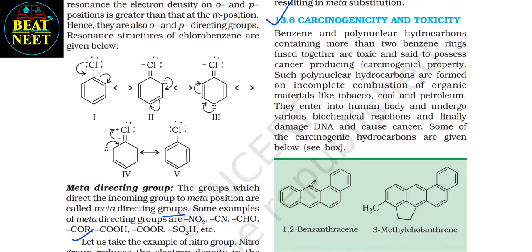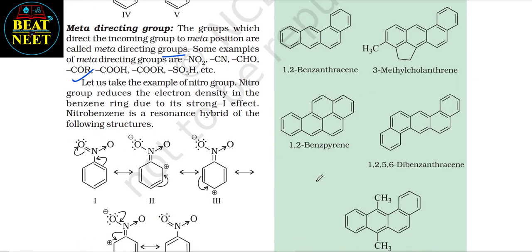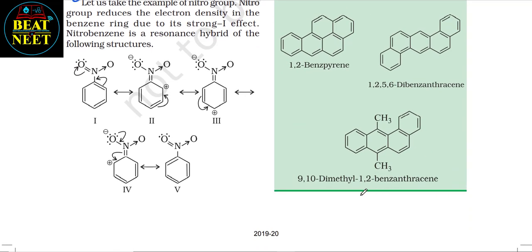13.6 Carcinogenicity and toxicity: benzene and polynuclear hydrocarbons containing more than two fused benzene rings are toxic and possess carcinogenic (cancer-producing) properties. Such polynuclear hydrocarbons are formed on incomplete combustion of organic materials like tobacco, coal, and petroleum. They enter the human body, undergo various biochemical reactions, and ultimately damage DNA and cause cancer. Some carcinogenic hydrocarbons include 1,2-benzanthracene, 3-methylcholanthrene, 1,2-benzopyrene, 1,2-5,6-dibenzanthracene, and 9,10-dimethyl-1,2-benzanthracene.